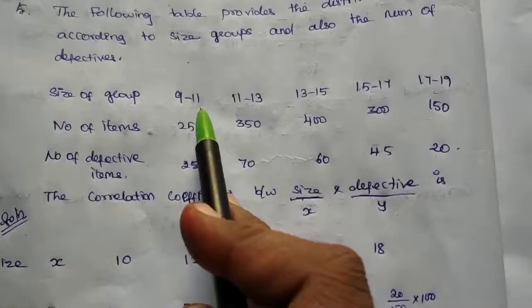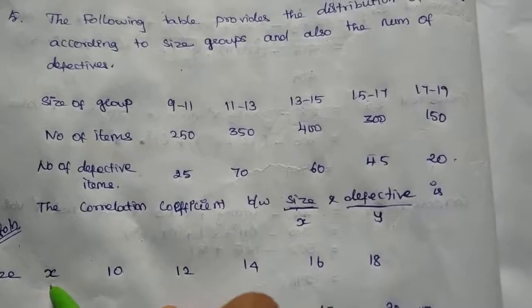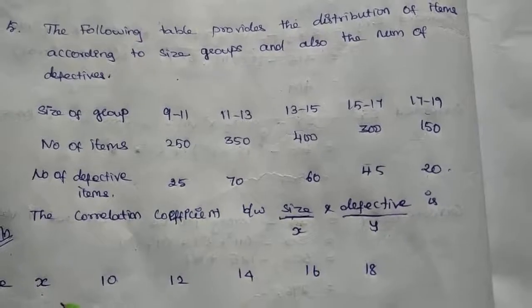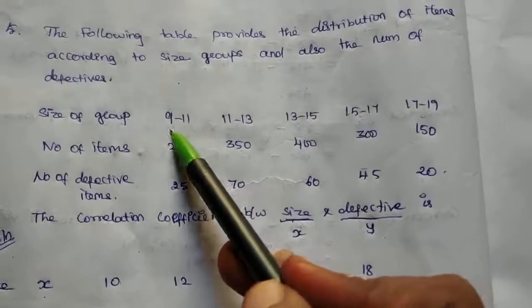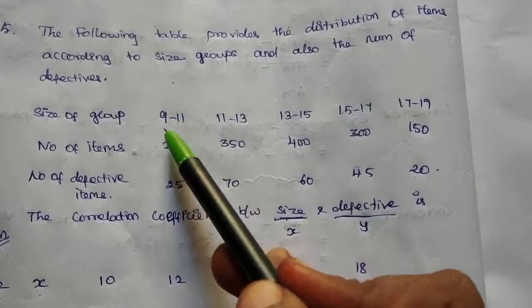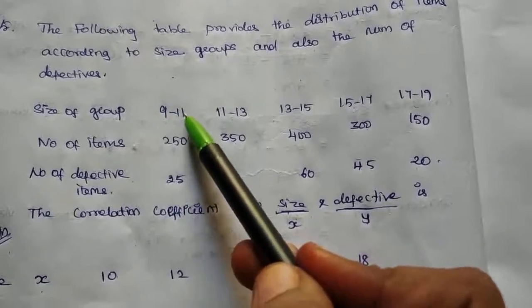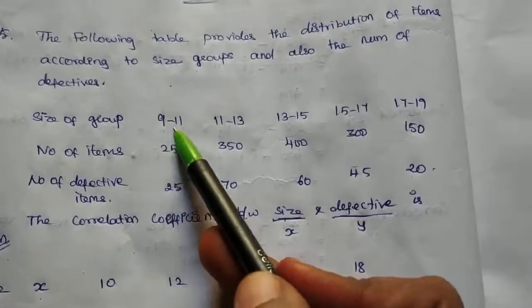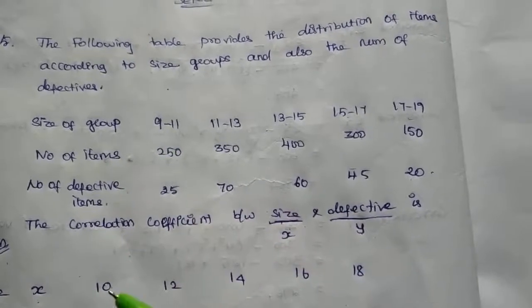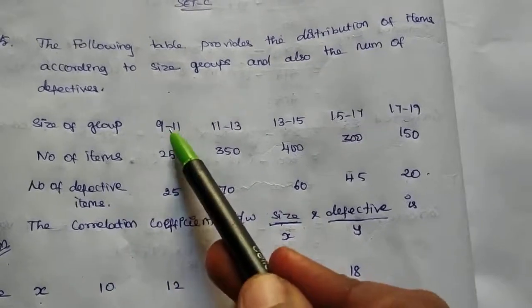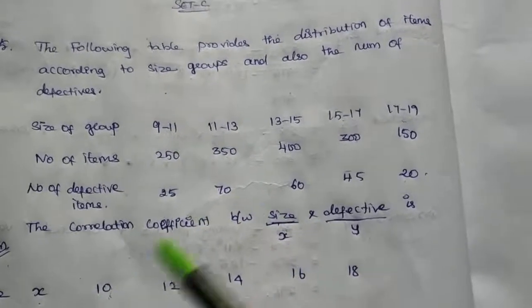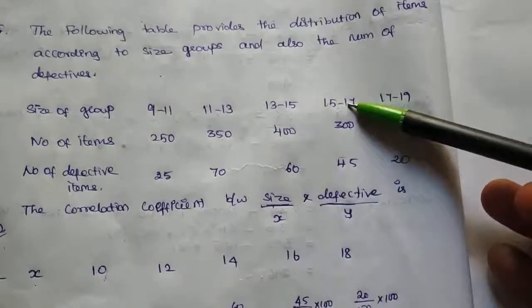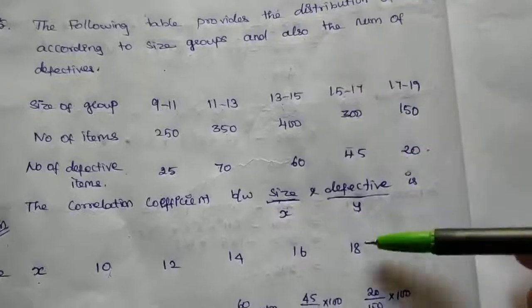9 to 10, 11 to 11, we need to get the midpoint. From Chapter 15, standard deviation: mid value equals upper limit plus lower limit divided by 2. So middle value: 10, then 11 to 13 middle value 12, middle value 14, middle value 16, and 17 to 19 middle value 18.